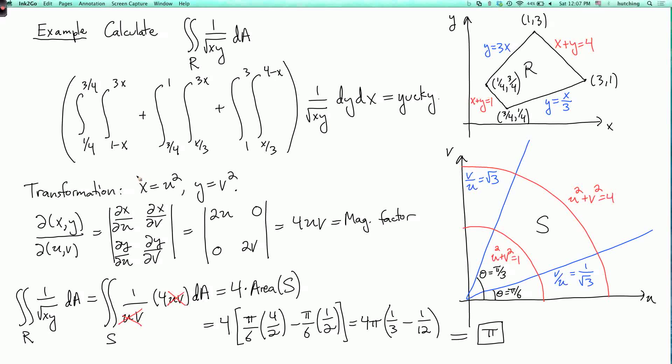But once we cleverly change coordinates by x equals u squared and y equals v squared, the integral becomes trivial. We just have to calculate the area of the region, which we could do. So if you make your change of coordinates cleverly, then you can often turn a difficult or even impossible problem into an easier or at least doable problem.